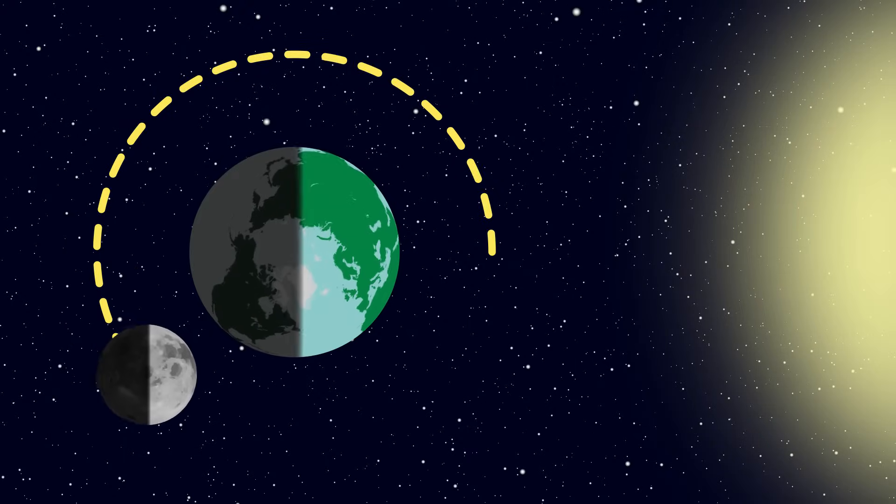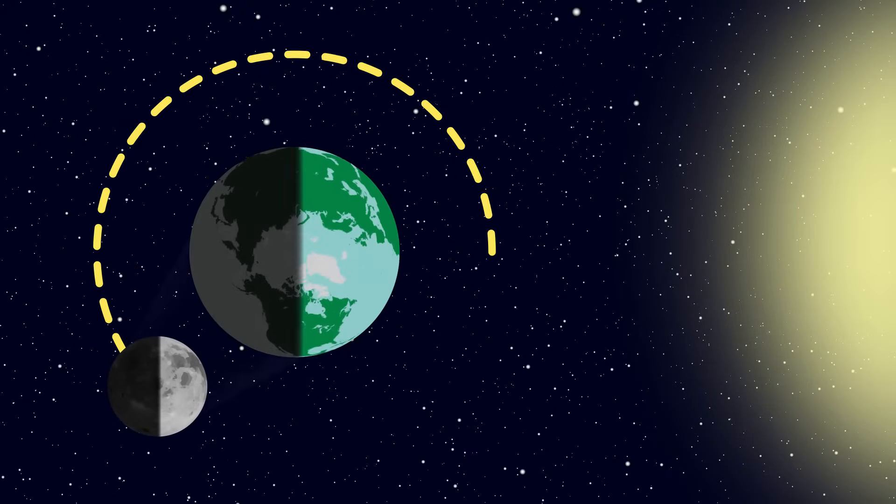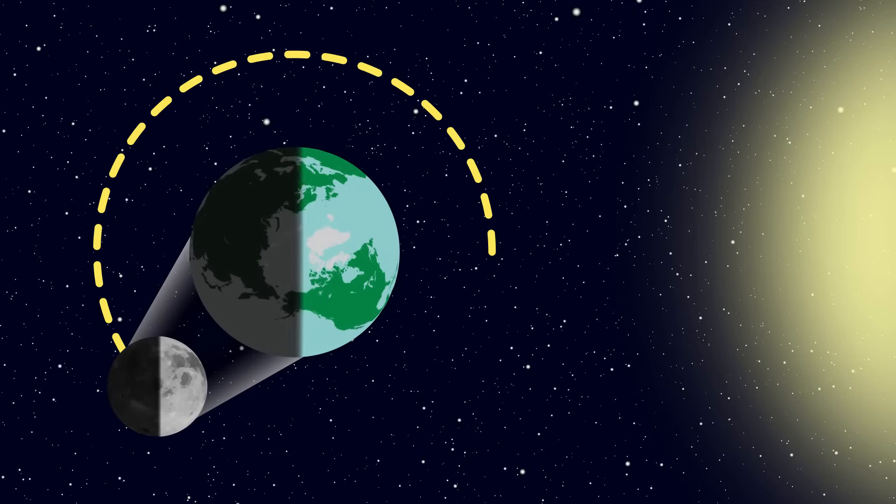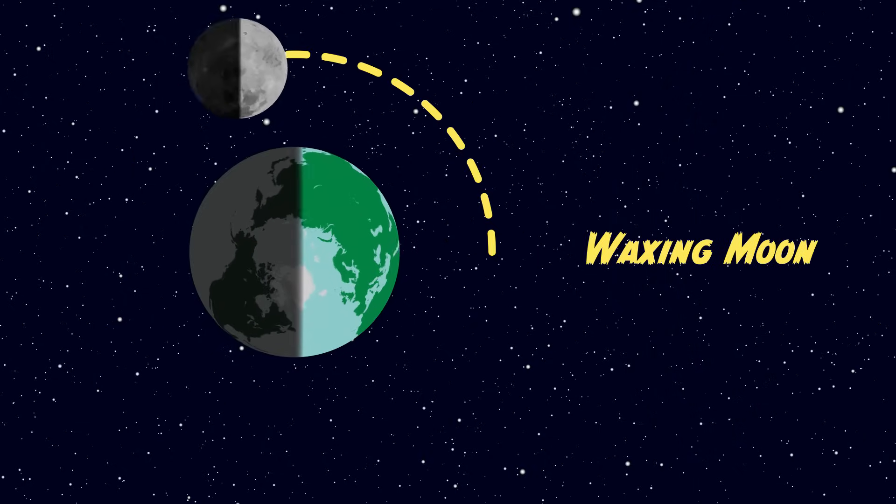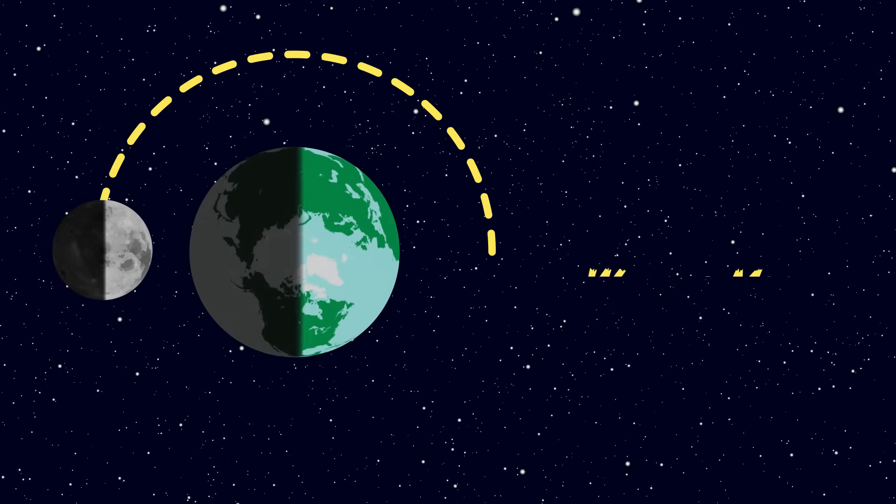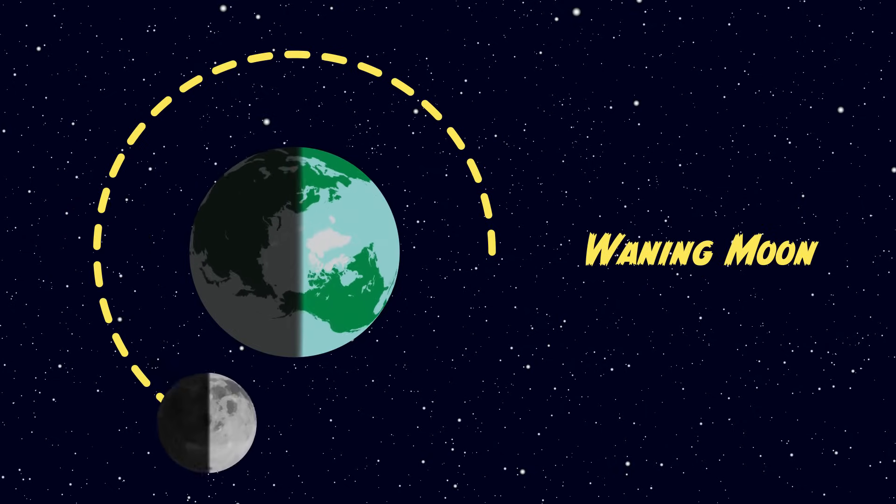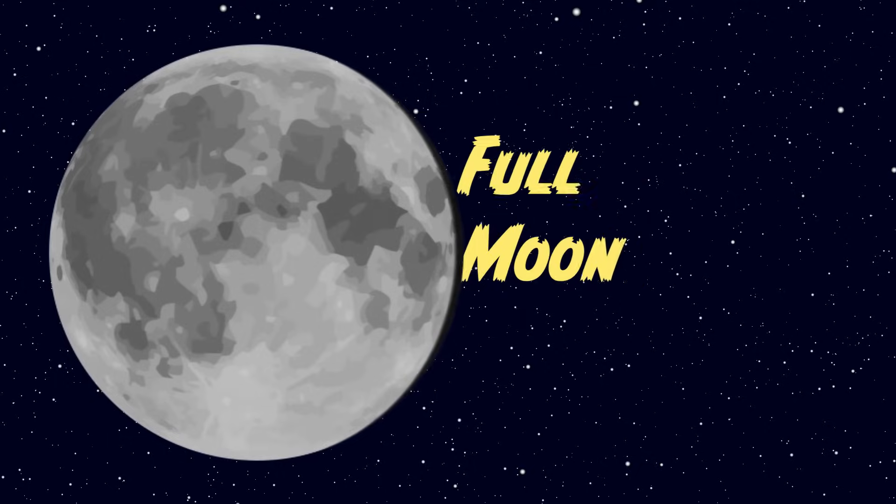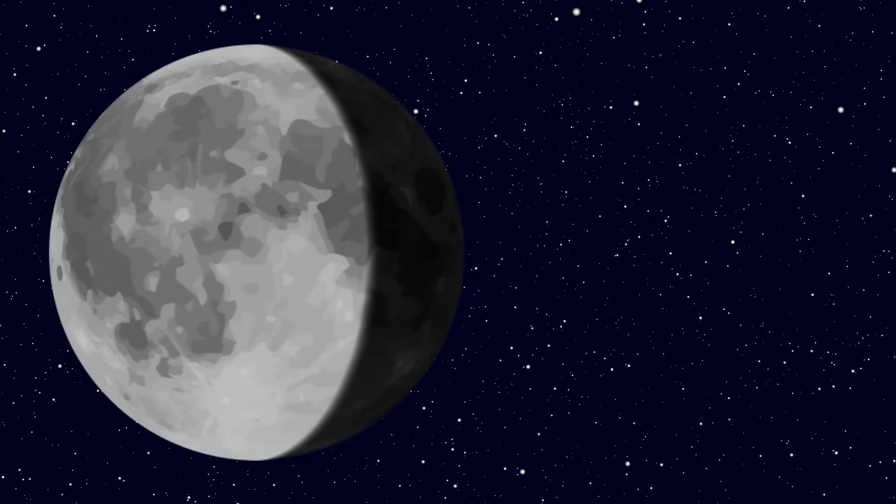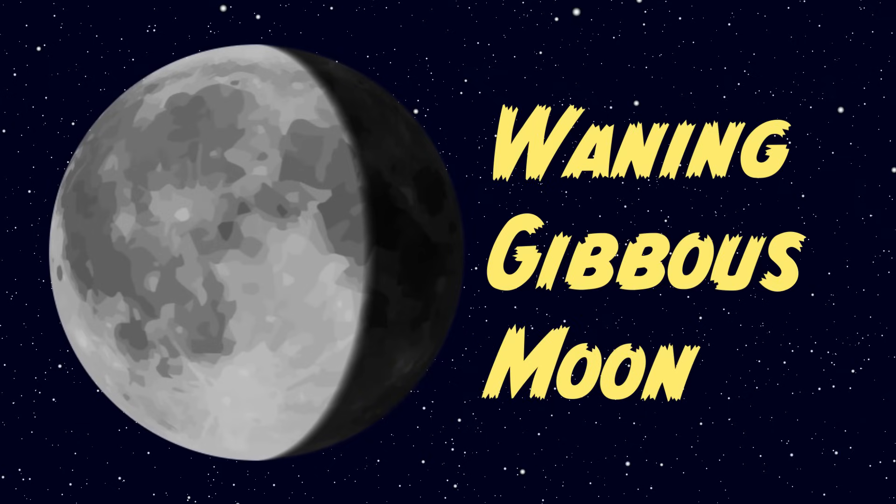As the moon continues its rotation around the Earth after the full moon, the lit portion begins to shrink. Remember, the first half of the moon's phases was called the waxing moon. We call the second half the waning moon, which means to decrease in size. The next phase after the full moon is another gibbous moon, this time the waning gibbous moon, because now the lit up face of the moon is shrinking.